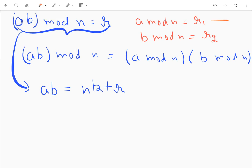And from statement one and statement two I can respectively write that a is equal to n times k1 plus r1 and my b is equal to n times k2 plus r2.